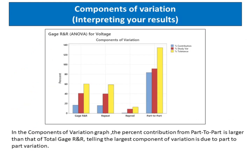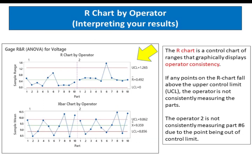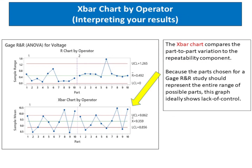In the components of variation graph, the percent contribution from part-to-part is larger than that of total gauge R and R, telling us the largest component of variation is due to part-to-part variation. The R chart is a control chart of ranges that graphically displays operator consistency. If any points on the R chart fall above the upper control limit (UCL), the operator is not consistently measuring the parts. Operator 2 is not consistently measuring part number 6 due to the point being out of the control limit. The X-bar chart compares part-to-part variation to the repeatability component. Ideally, the graph has narrow control limits with many out-of-control points, indicating a measurement system with low variation.